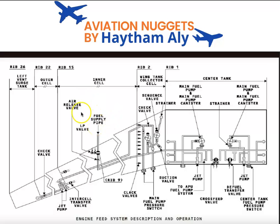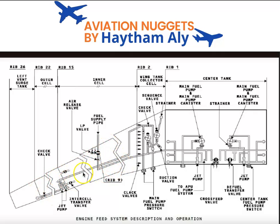Our main target is to supply fuel via the supply line to the engine. Fuel goes to the engine first from the center tank. When the center tank is empty, fuel is supplied by the wing tank inner cell. When the wing tank inner cell fuel goes to a low level and the low level sensor becomes dry, fuel goes from the outer cell to the inner cell through two intercell transfer valves.